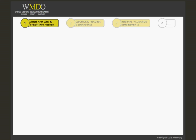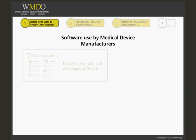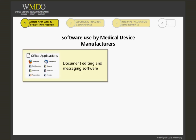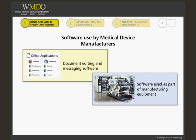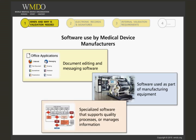In order to support operations, every company today relies on computer systems. These include the usual document editing and messaging software, software used as part of manufacturing equipment, or specialized software that supports quality processes or managers' information. These tools serve to increase our productivity by automating activities, facilitating communication, and reducing paperwork.